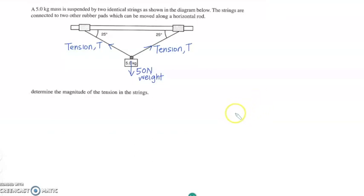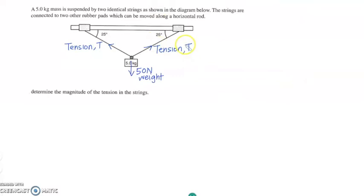This video is related to resolving of forces. One of my students asked me something related to this, and I thought I shall illustrate it with an example. Now two strings are supporting a 50 Newton weight — it is suspended, so we know the system is in equilibrium. There's no resultant force acting on this weight, so the weight is supported by the two strings.